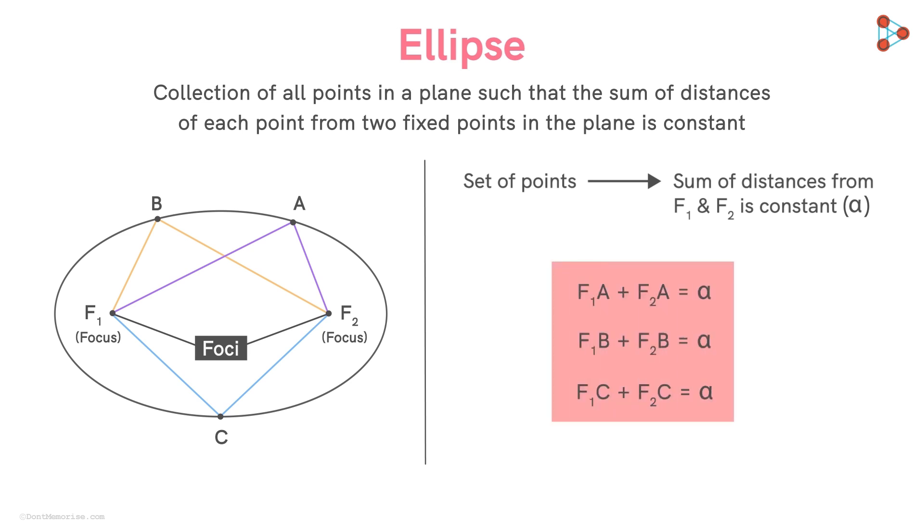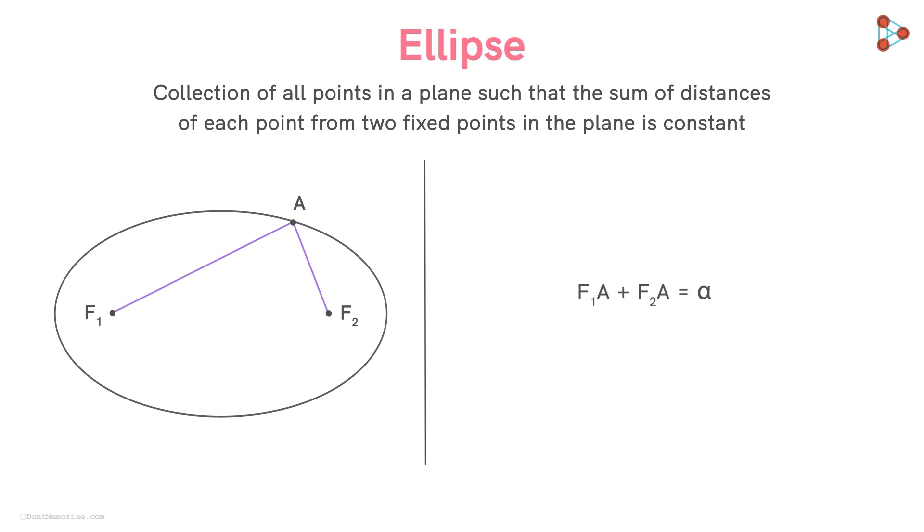Here we took the constant to be alpha, but we can take it any number for the constant sum of distances, with the only condition being that it should be greater than the distance between the foci of the ellipse.